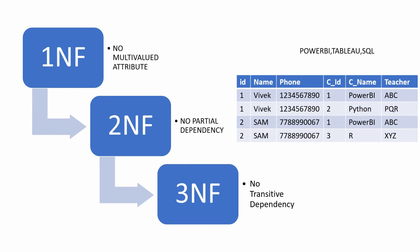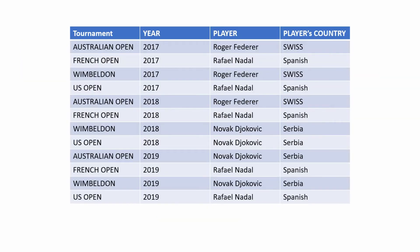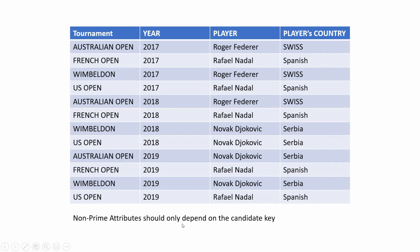Let's understand this with a practical example. This table displays the winner of major tennis tournaments for the last three years, along with the country they belong to. The candidate key or primary key for this data set is tournaments and years. Now, player's country, instead of solely depending on the primary key, is also dependent on the player's name, which is in violation of third normal form since player is not part of the candidate key.